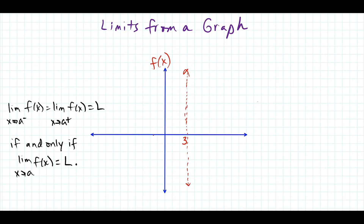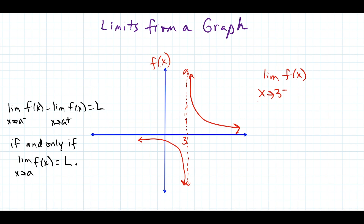If I draw a function here, the limit as x approaches 3 from the left side of f of x — I just have to follow this carefully. If I'm approaching 3 on the left side, I'm following this portion of the graph, getting closer and closer to x equals 3. On the left side, you can notice the graph is heading down towards negative infinity. So my limit is heading towards negative infinity because the graph is heading south.